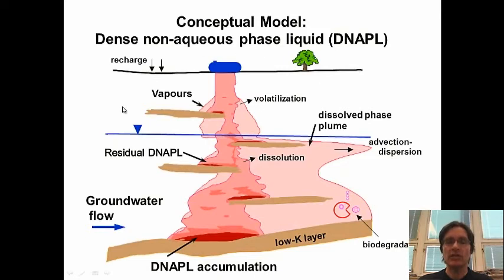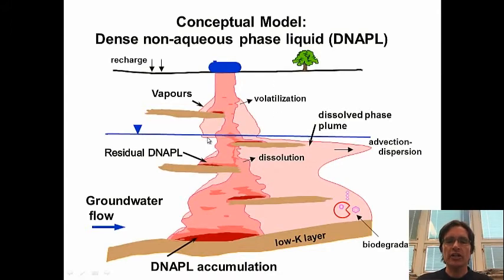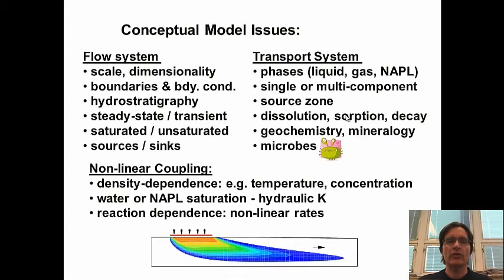When developing a conceptual model, we often need to simplify the system — we don't need to include all processes or all dimensions. The trick is to focus only on the processes critical to your specific case and simplify the dimensionality as much as possible. For instance, we don't always need to include the unsaturated zone if it's fairly thin or if our source reaches the water table quickly — we can just treat the saturated zone. We can often assume a 2D or even 1D system initially to gain insight into what processes are important.